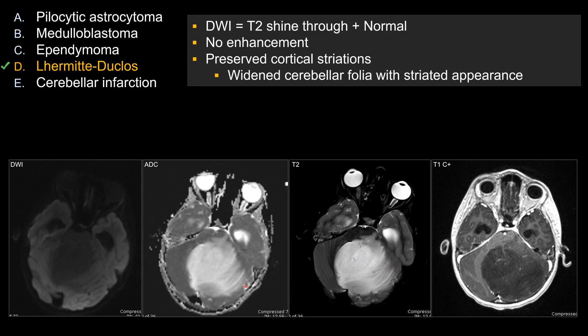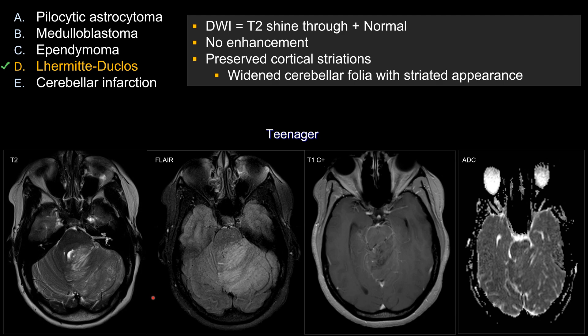In this case, it is somewhat challenging because it is very reasonable to consider that this could be a low-grade neoplasm — low-grade in the sense that there is no restricted diffusion. You may also consider whether this could be a cerebellitis. In that case, patients tend to present with acute symptoms. In this different patient — an older teenager — you can see on the diffusion-weighted sequence and ADC that there is no restricted diffusion; in fact, the ADC looks completely normal.